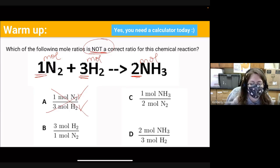Are there 3 moles of H₂? Yes. Are there 1 mole of N₂? Yes. So it can't be that one. Are there 1 mole of NH₃? No, there are actually 2 moles, so it's probably this one.